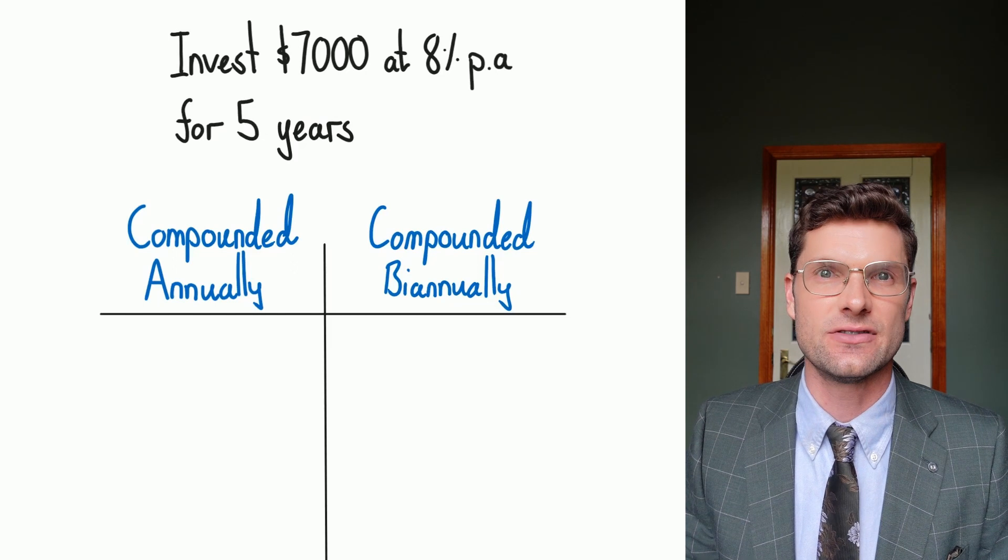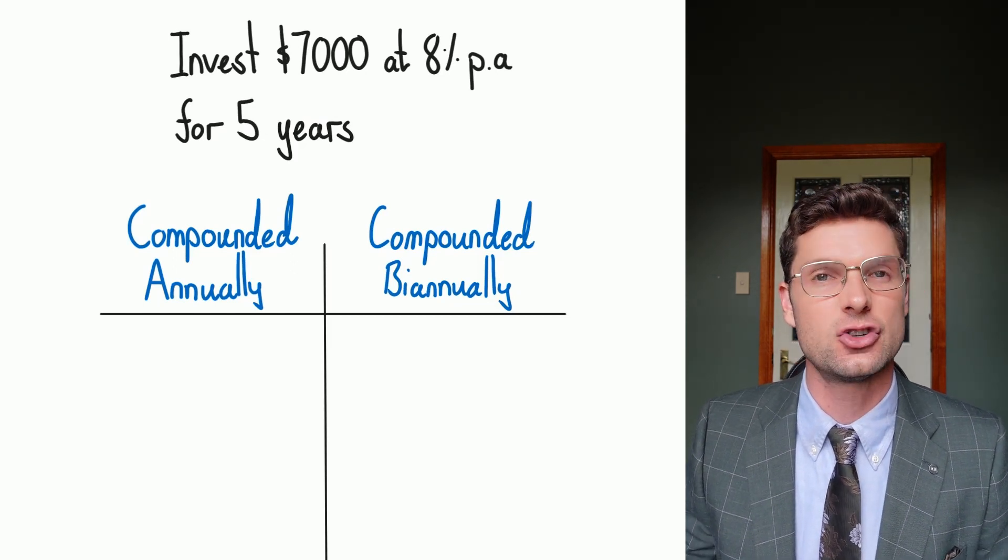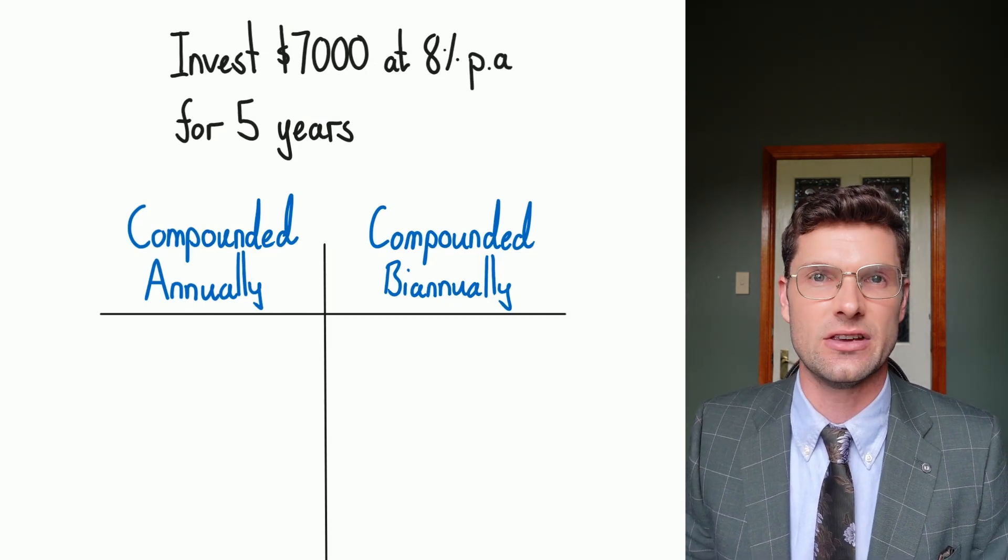For this example, we're going to look at the same set of circumstances, but one's been compounded yearly and one's been compounded twice per year. So we've got $7,000 at 8% for 5 years.